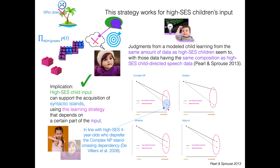This result for complex NP island-crossing dependencies is in line with the one data point we have from four-year-olds who are high SES, who in fact just prefer complex NP island-crossing dependencies — they don't like it — and that would be exactly what would be predicted here. So this is in line with the limited child data we already have to validate it, which suggests that this learning strategy is doing something right. This is a reasonable way to therefore assess the quality of the input.